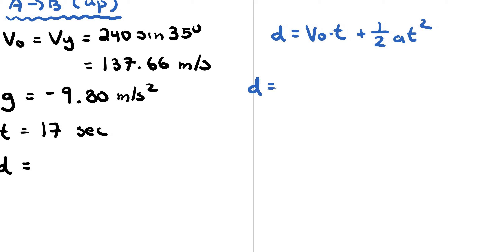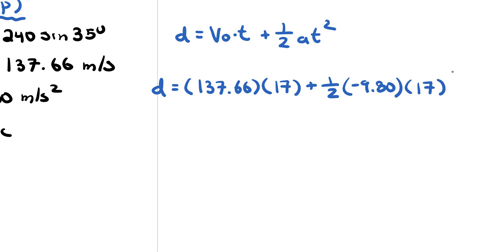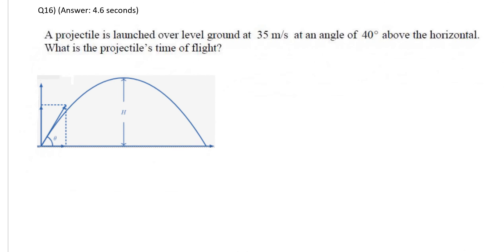Plugging in: 137.66 times 17 plus one-half times negative 9.80 times 17 squared. Putting all that into the calculator, we get approximately 924.09 meters. Feel free to round to the nearest whole number or two decimal places.